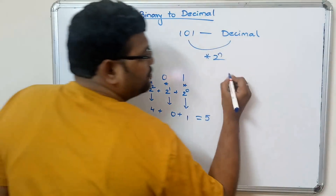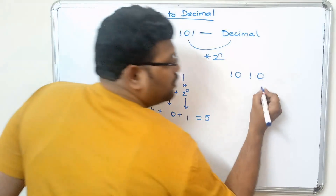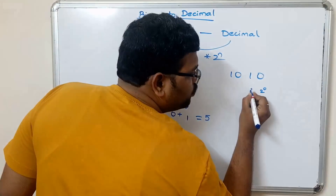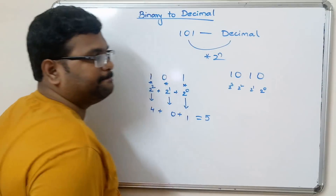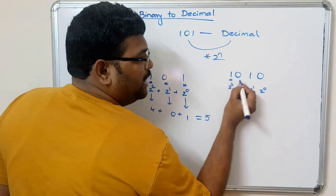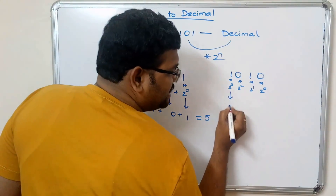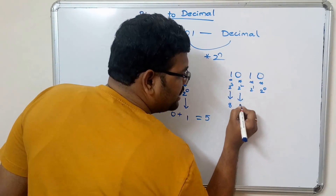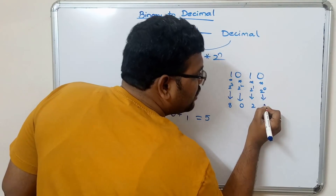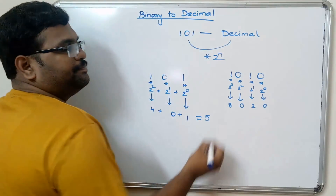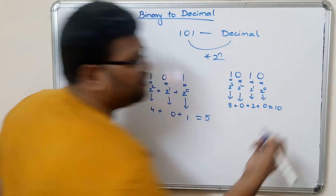Let us consider 1010. This gives: 2 power 0, 2 power 1, 2 power 2, 2 power 3. We multiply with the sequence of 1s and 0s: this result is 0, this result is 2, this result is 0, this result is 8. Add all these things — we will get 10.